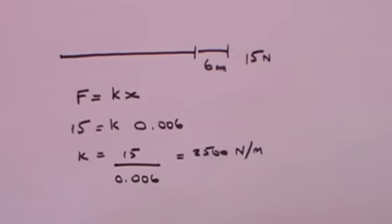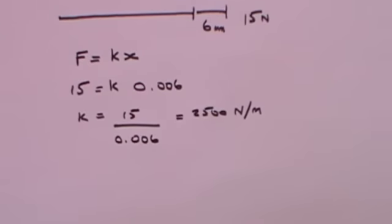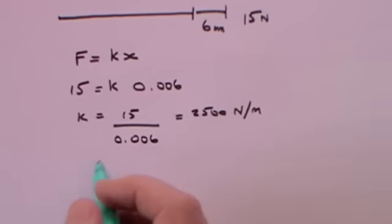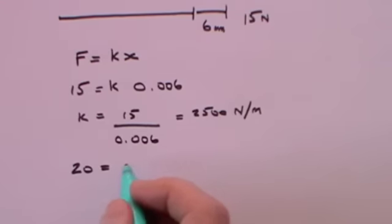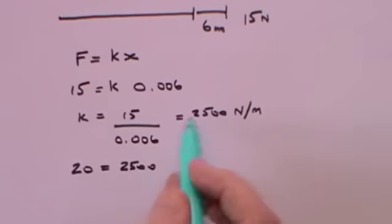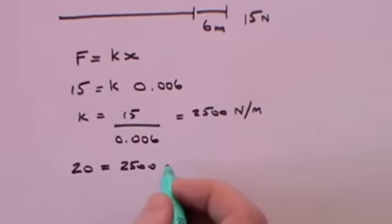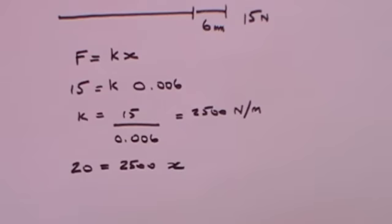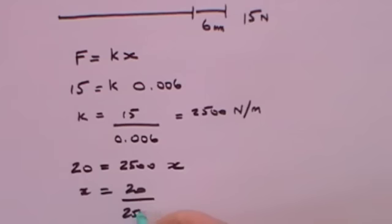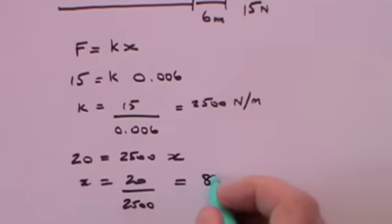Now for the first part: what is the extension if the force is 20 newtons? 20 equals the stiffness constant 2,500 times the extension x. That gives x equals 20 over 2,500, which when expressed in millimetres becomes 8 millimetres extension.